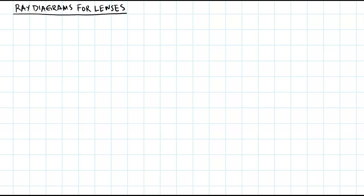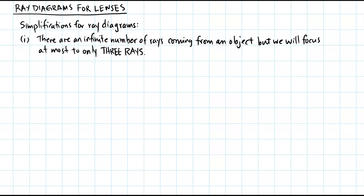Ray diagrams for lenses are drawn to determine the location of the image and to derive image characteristics. There are two major simplifications: although an object has an infinite number of rays coming from every single spot, we will only focus on at most three rays.